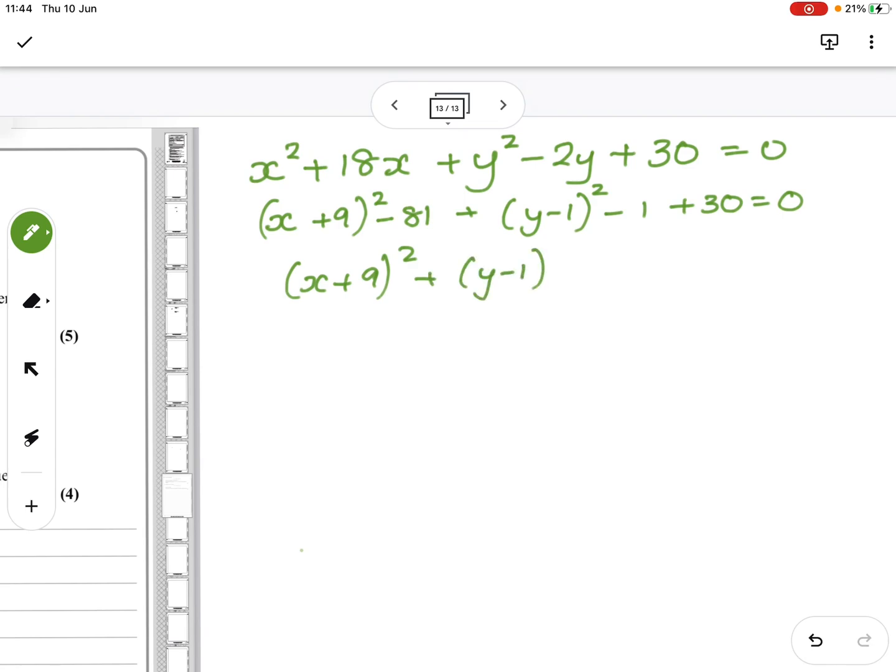9 squared plus y minus 1 all squared minus 1 plus 30 equals 0. So I've got x plus 9 all squared plus y minus 1 all squared. And on the other side, I have got minus 81 minus 1 plus 30 gives me minus 52, which crops across to 52. So I have a center of a circle at minus 9, 1 with a radius of root 52.